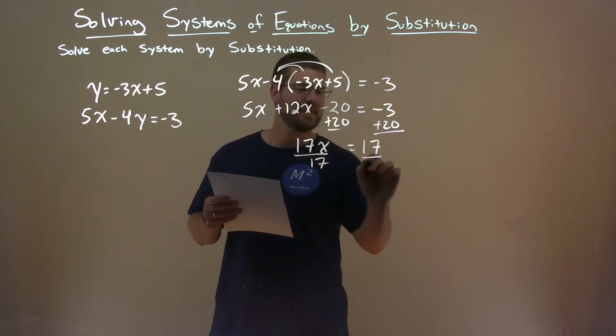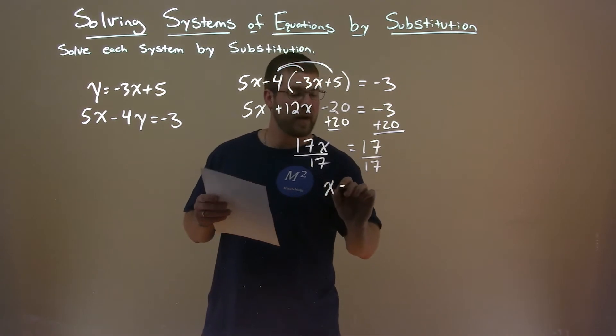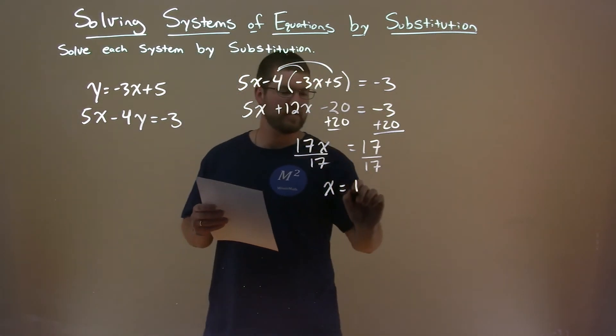Divide both sides by 17. And we're left with x by itself. And 17 divided by 17 is 1.